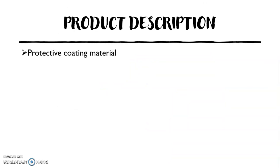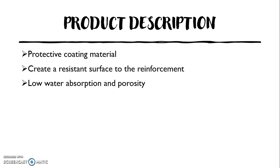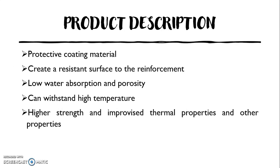For the product description, HGC is a protective coating material that coats the surface to protect the reinforcement bar from corrosion. It also creates a resistant surface for the reinforcement bar, has low water absorption and porosity, and can withstand high temperatures up to 1200 degrees Celsius. The product also has the highest ranked and improved thermal properties as well as low water permeability.